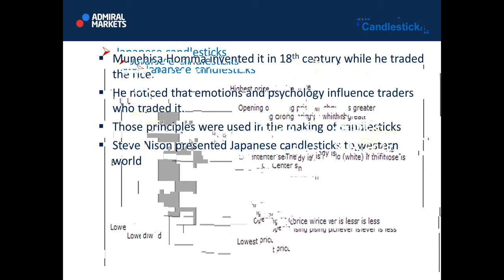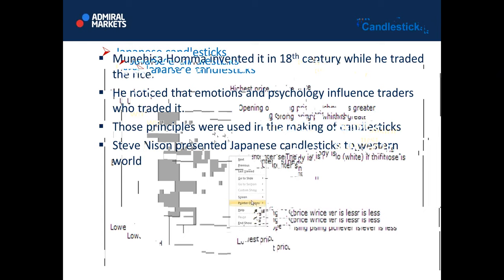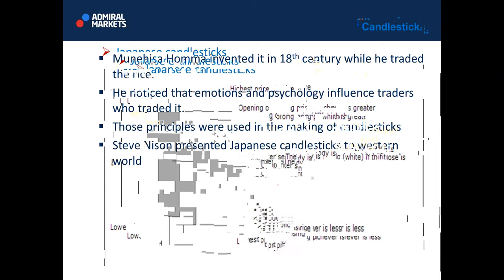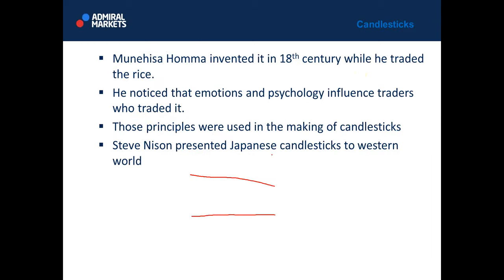All of those patterns which Steve Nison presented in his books and online materials can be spotted by the indicator which you probably got by now. Even though if you don't know all the patterns, you still can use different reversal patterns to trade off support and off resistance. Japanese candlesticks are usually used in confluence with important support and resistance levels.